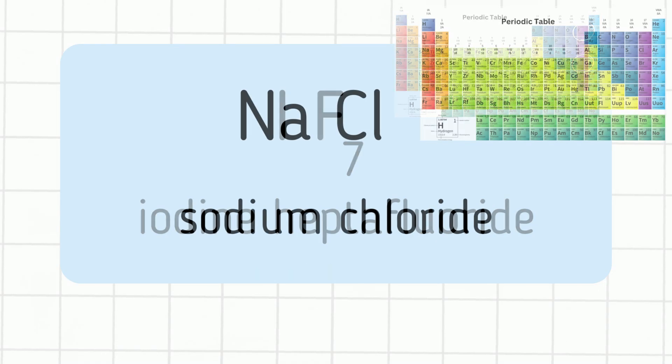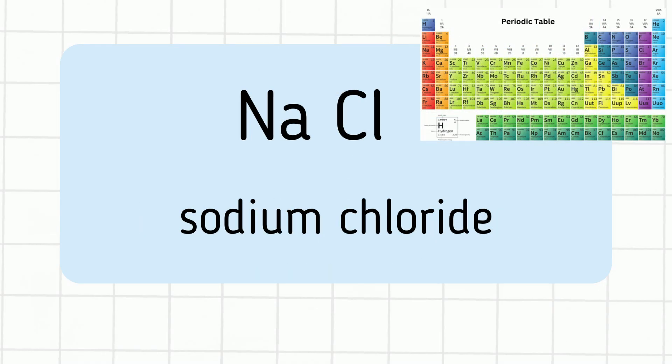Next, we have sodium chloride. Sodium is found in group 1, and it is an alkaline metal. And chlorine is found in group 17, and it is a reactive nonmetal. So we have a metal and nonmetal. So it is an ionic bond.